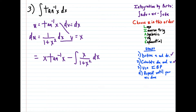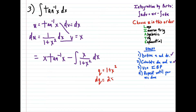For this new integral, maybe I should pick a different letter since we already used u. So we could use the letter q. So q is equal to 1 + x². Then dq is going to be equal to 2x dx. So if we solve for dx, we get dq over 2x equals dx.